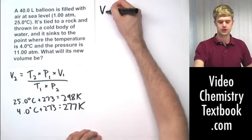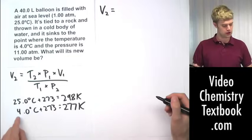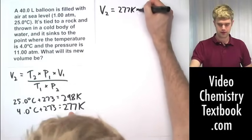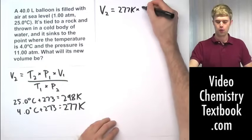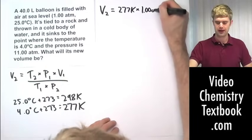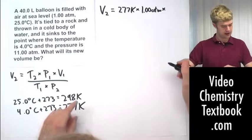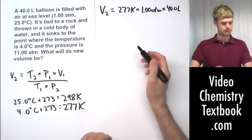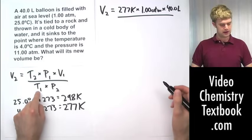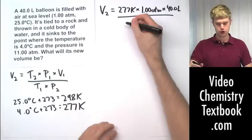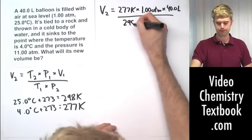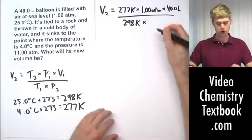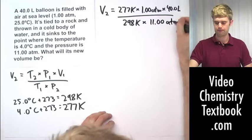We have V2 equals T2, which is 277 Kelvin times P1, the initial pressure, which is 1.00 atm times V1, the initial volume, 40.0 liters. We're going to divide that by T1, again in Kelvin, 298 Kelvin, which is multiplied by P2, the second pressure, which is 11.00 atm.